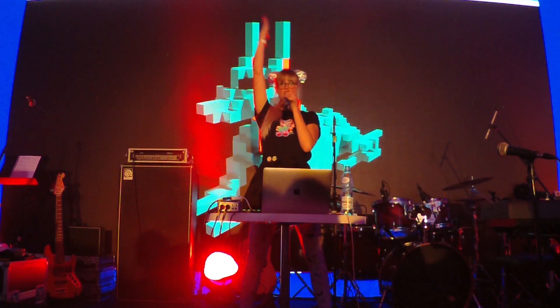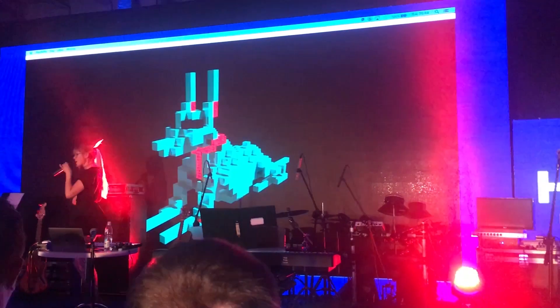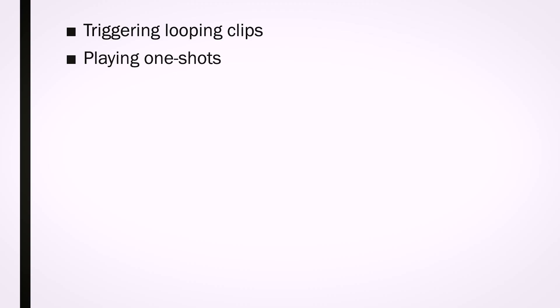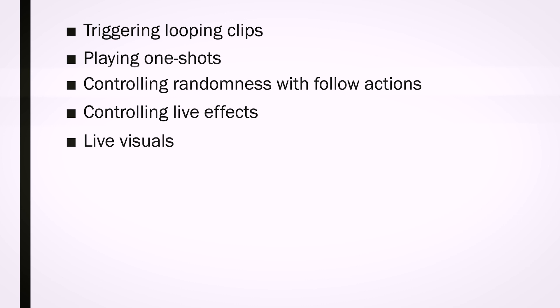The venue sound technician only needs to balance my voice with the rest of the track, and my visuals are streamed to the venue screen or projector via HDMI. In order to create a flexible live show, the things I do are: triggering looping clips, playing one shots, controlling randomness with follow actions, controlling live effects, live visuals, and performing live vocals and live keys. I'm going to break this video down into two parts — in the first part I'll focus on the clips I create and put into Ableton, the raw building blocks of my track, and then I'll cover everything else in a separate video.